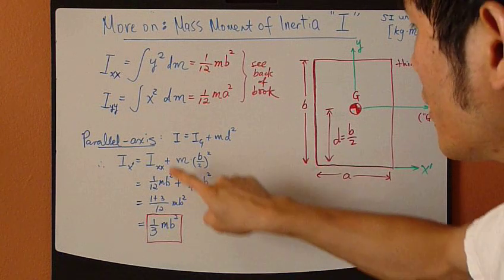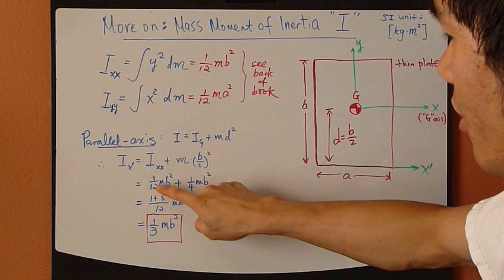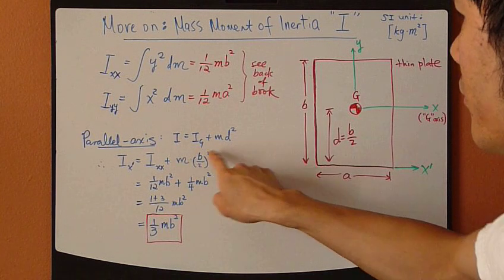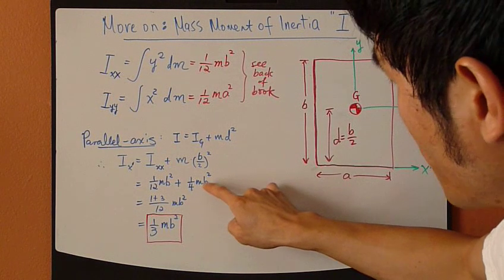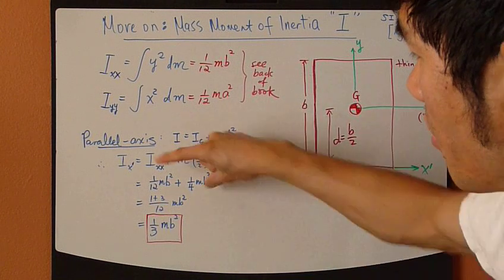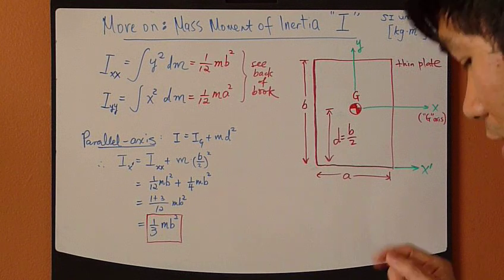So it's just plugging in. This term is given in the back of the book, so it's exactly 1/12 mb² plus, just expand that, so it's 1/4 mb². Combine the two terms, turns out to be 1/3 mb².